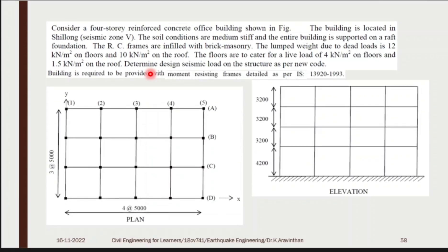This is a four-story reinforced concrete office building. This is the elevation. In first floor you have a height of 4.2 meters and rest of the floors are having 3.2 meters. This is 3200 mm and 4200 mm. This is in terms of mm and you can see the difference of height.